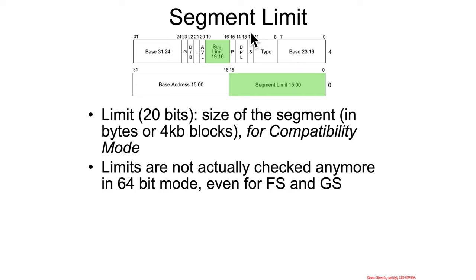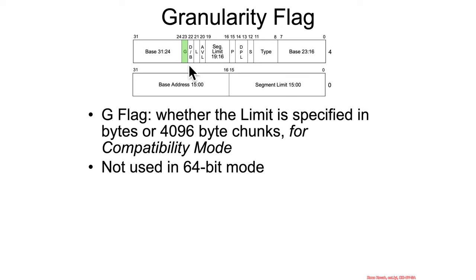Continuing with segment descriptors in the GDT and LDT: we saw the base is a 32-bit value only really used in 32-bit mode. There's also the limit, which is a 20-bit value specifying the size of the segment. It can be specified in bytes or in 4-kilobyte blocks. This is only used in compatibility mode — in 64-bit mode, the limit is not actually checked, not even for FS and GS. The G flag, or granularity flag, says whether segment limits are in bytes or in 4096-byte page-sized chunks, and again, that's only relevant in 32-bit mode.